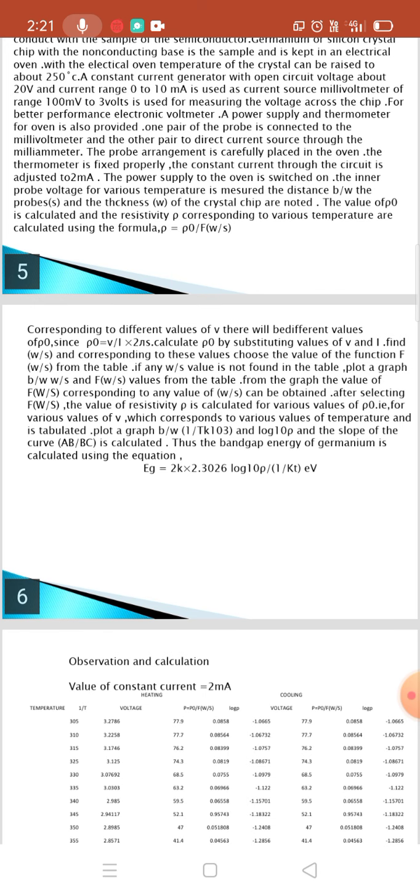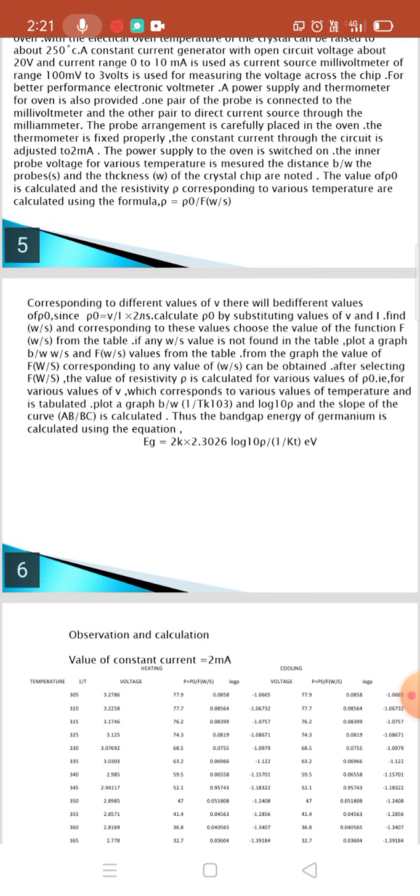If any W by X value is not found in the table, plot the graph between W by X and f(W/X) values from the table. From the graph, value of f(W/X) corresponding to any value of W by X can be obtained. After selecting f(W/X), the value of resistivity rho is calculated for various values of rho zero.